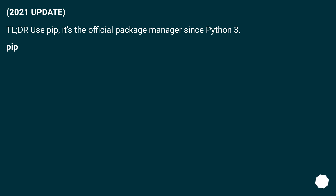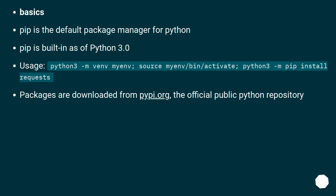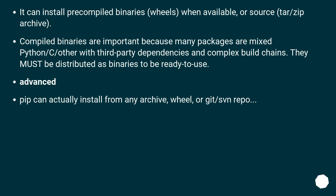2021 Update. TL;DR: use pip — it's the official package manager since Python 3. Pip is the default package manager for Python, built-in as of Python 3.0. Packages are downloaded from pypi.org, the official public Python repository. It can install precompiled binaries (wheels) when available, or source tar/zip archives. Compiled binaries are important because many packages are mixed Python/C with third-party dependencies and complex build chains — they must be distributed as binaries to be ready to use.